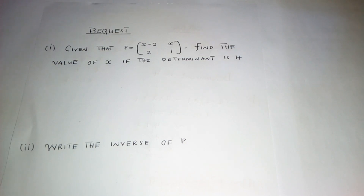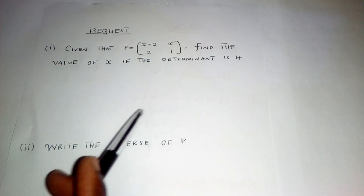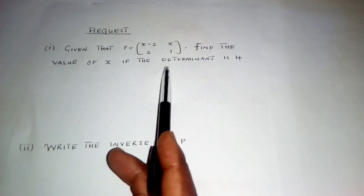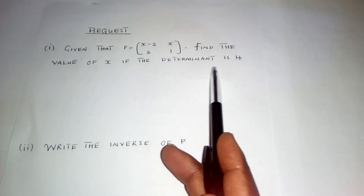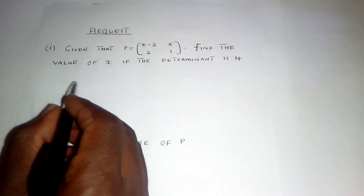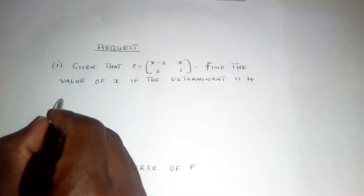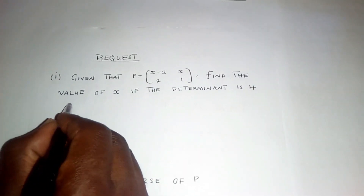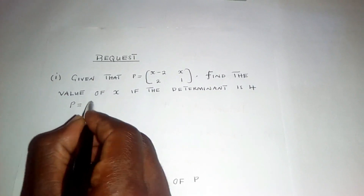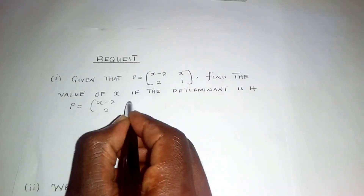So Sally, on how to work out this question — the first thing you need to put into consideration is the determinant. They have said the determinant is 4. So since the determinant is 4 and for us to find the determinant of P, this is our matrix P.